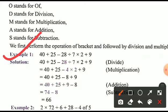Now see Example 1, which includes addition, multiplication, subtraction, and division. We solve this according to the order of operations. First we solve the division term, giving us 40 + 25 − 28 ÷ 7 × 2 + 9, which becomes 40 + 25 − 4 × 2 + 9, because 28 ÷ 7 = 4.